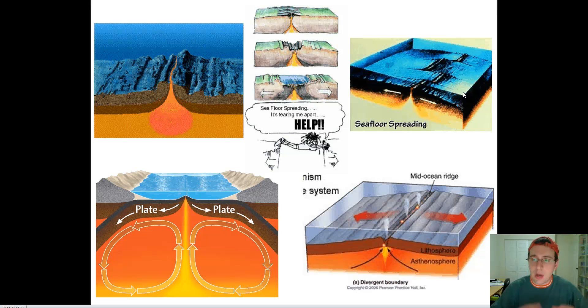By the way, that's the difference between magma and lava. Remember, magma is underground. Lava is when it reaches the crust and becomes exposed to either the air or the water. So when this lava solidifies, it makes new rock and pushes the crust apart.